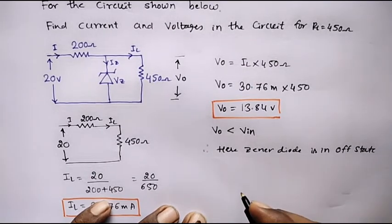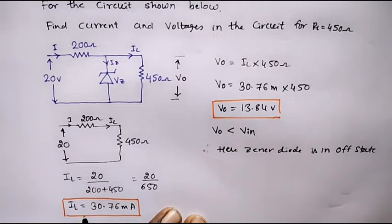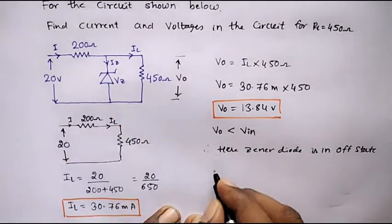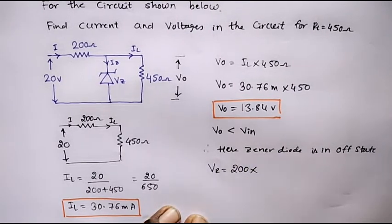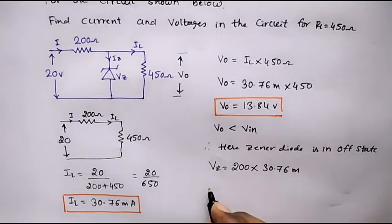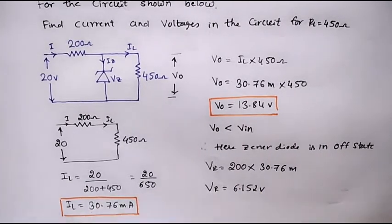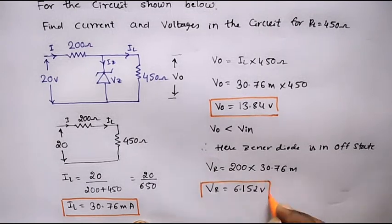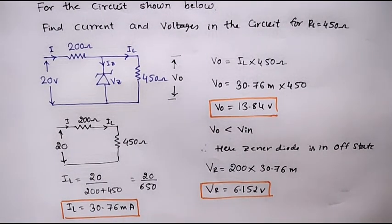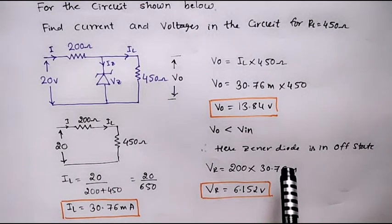We found the output voltage VO equal to 13.84 volts and the load current IL equal to 30.76 milliamps. Now calculating the voltage across R: VR equals 200 ohms multiplied by 30.76 milliamps, therefore VR equals 6.152 volts. In conclusion, in a regulator circuit, if the output voltage is less than the input voltage, then the Zener diode acts in the off state.